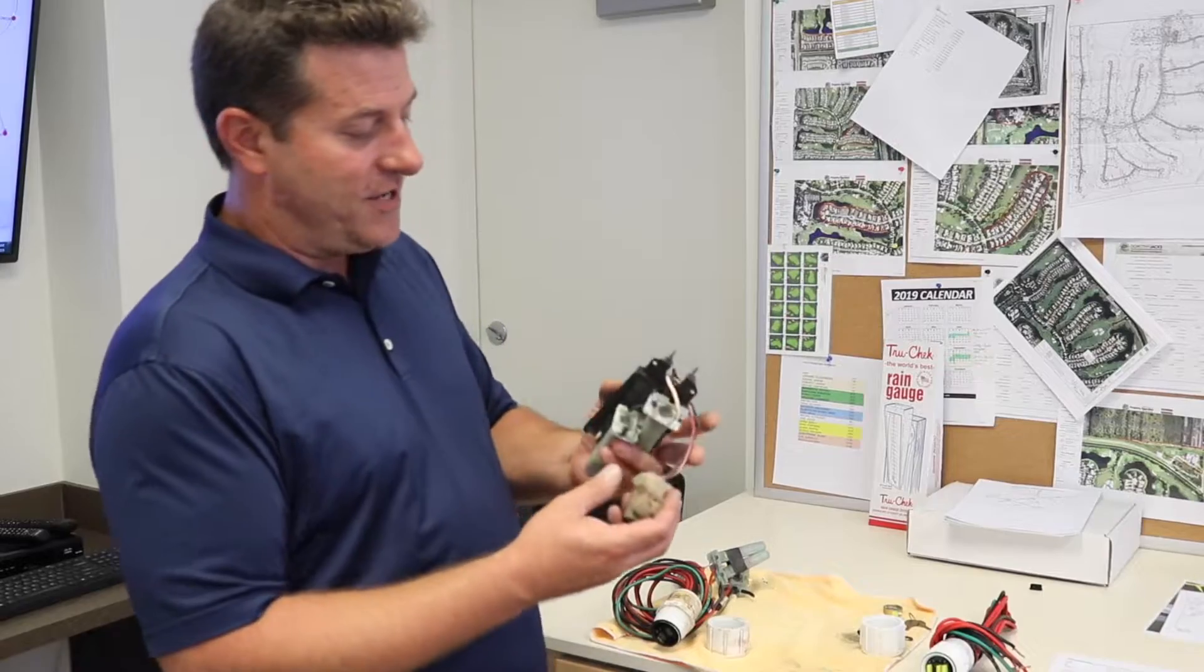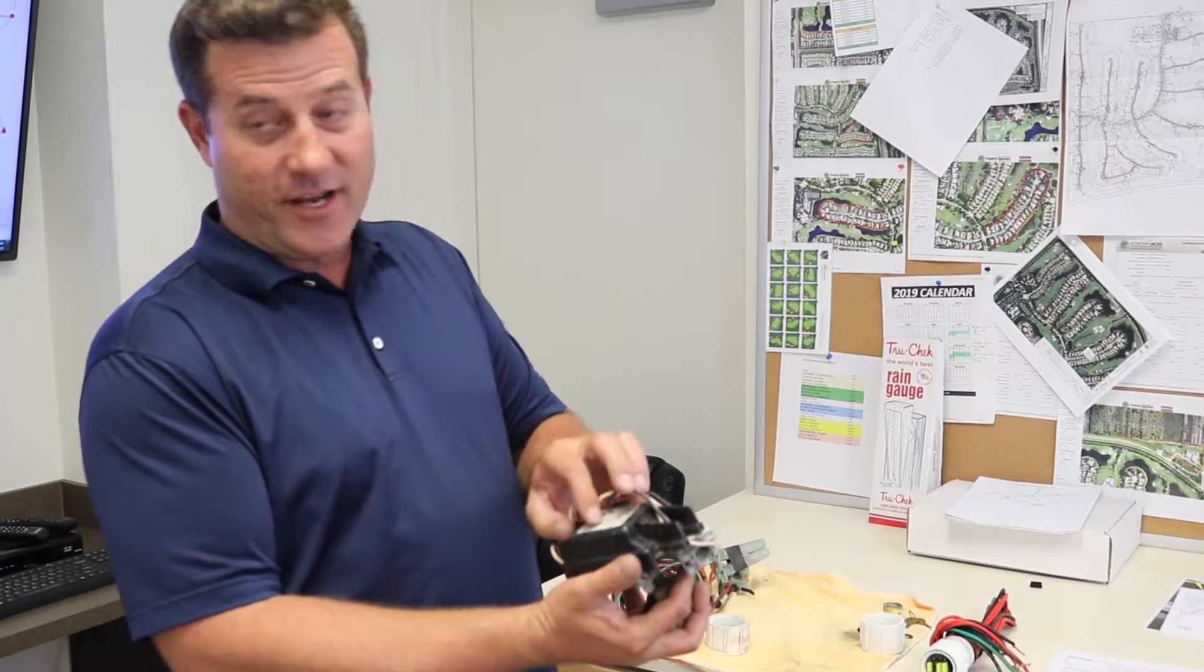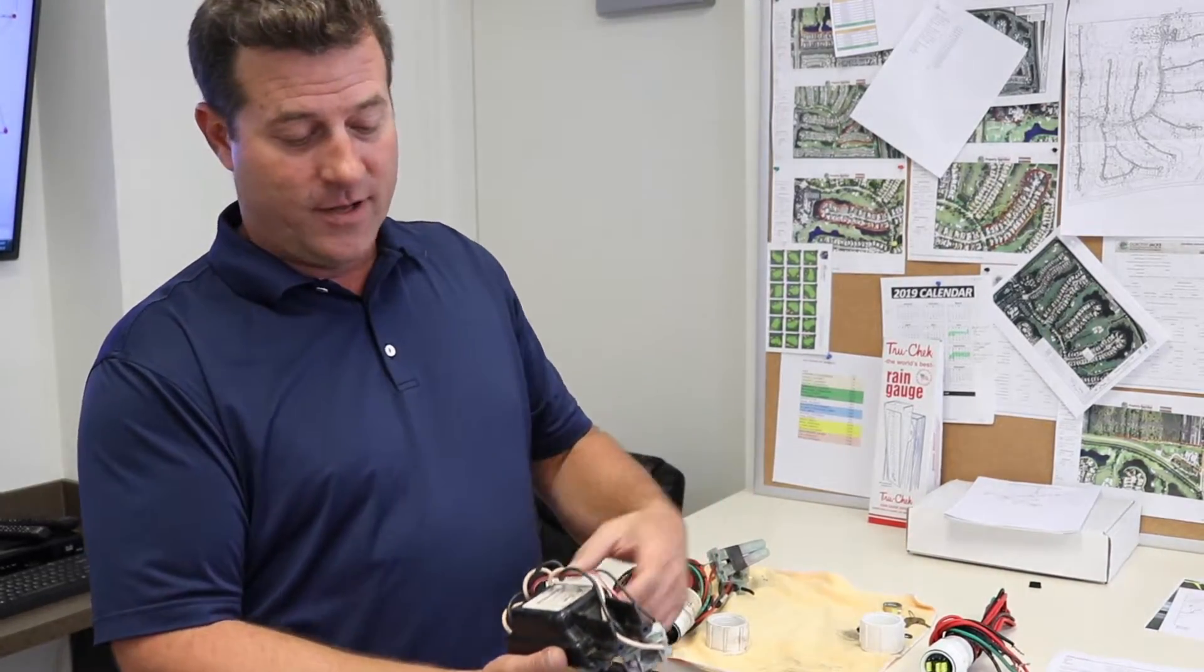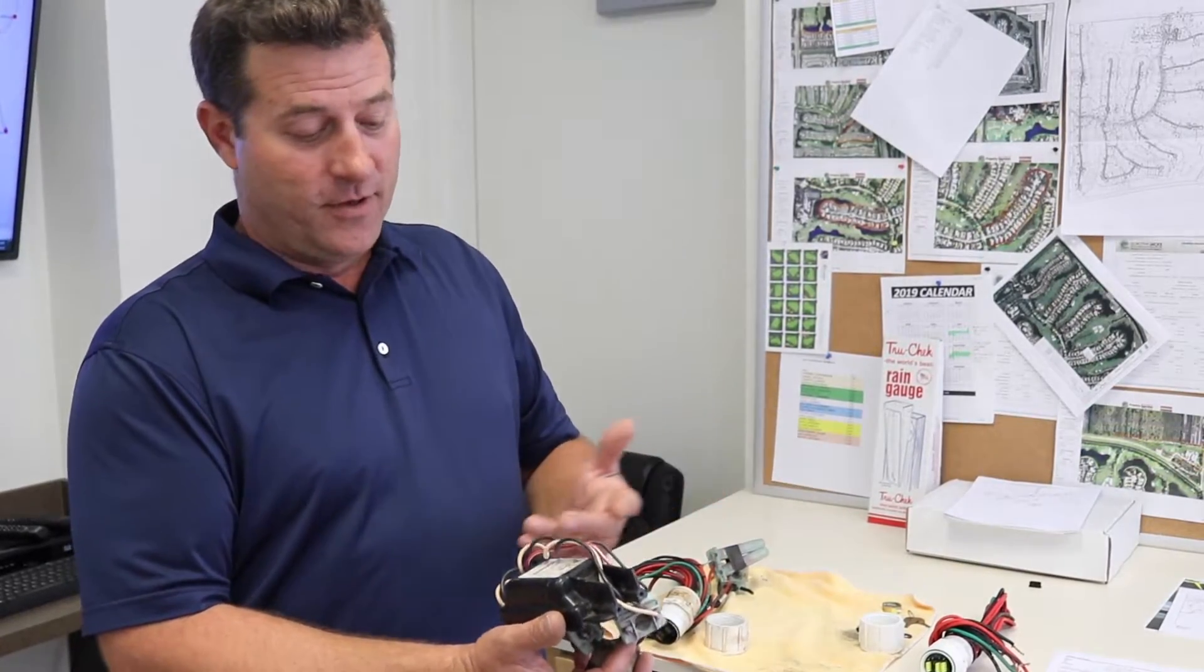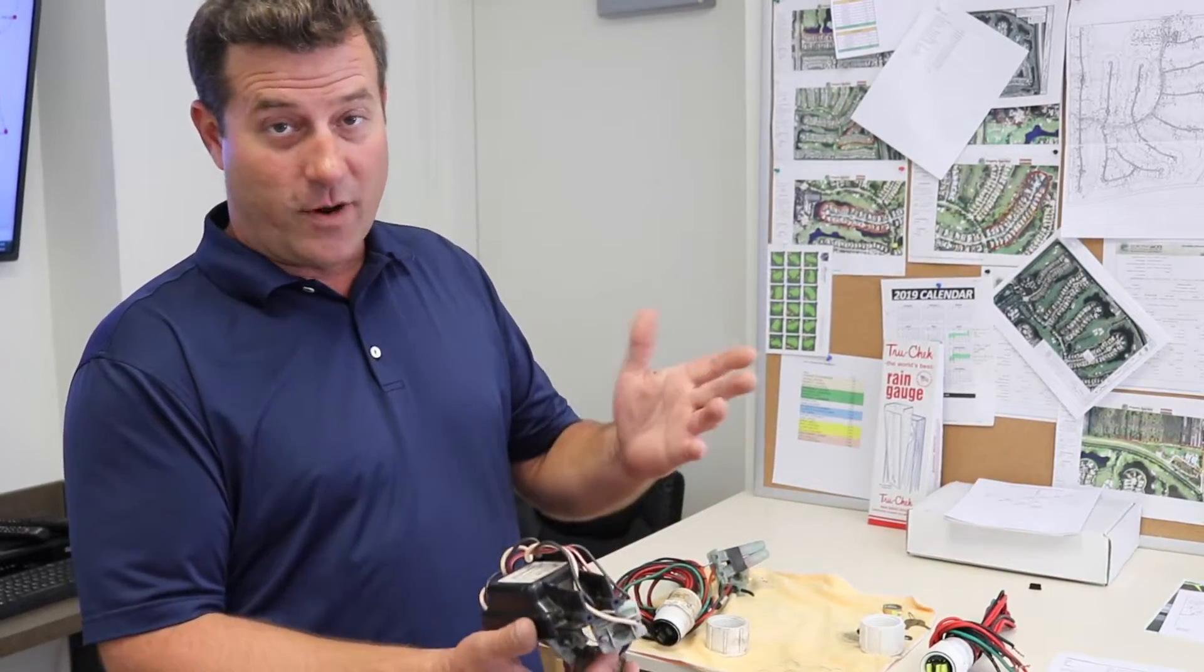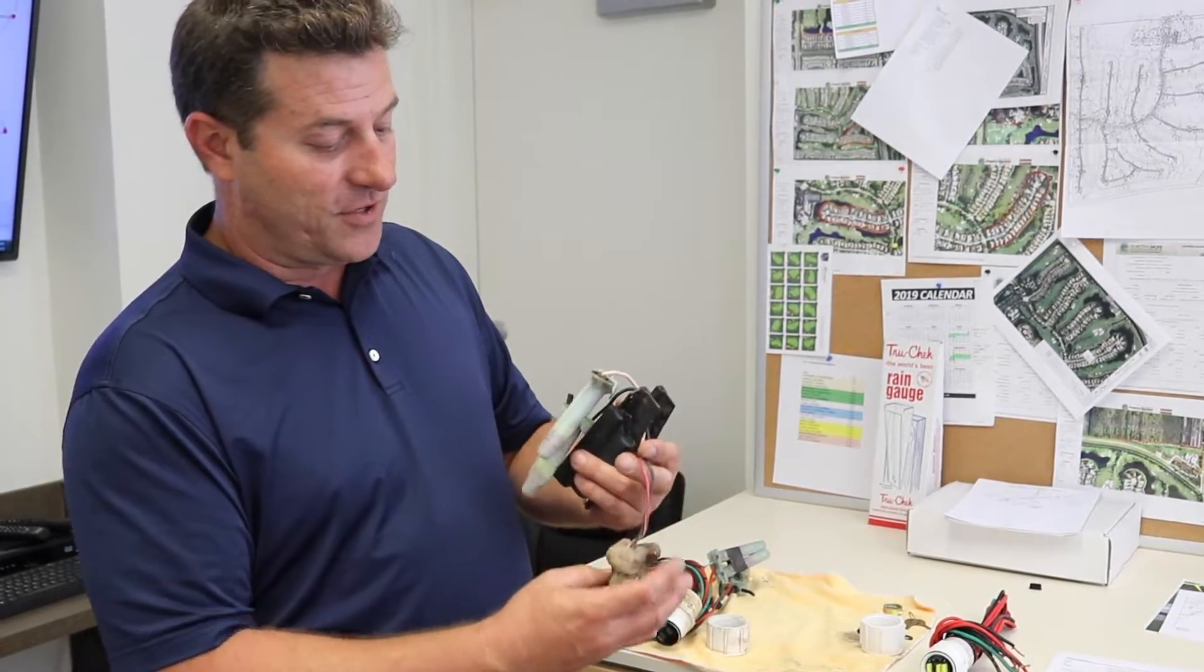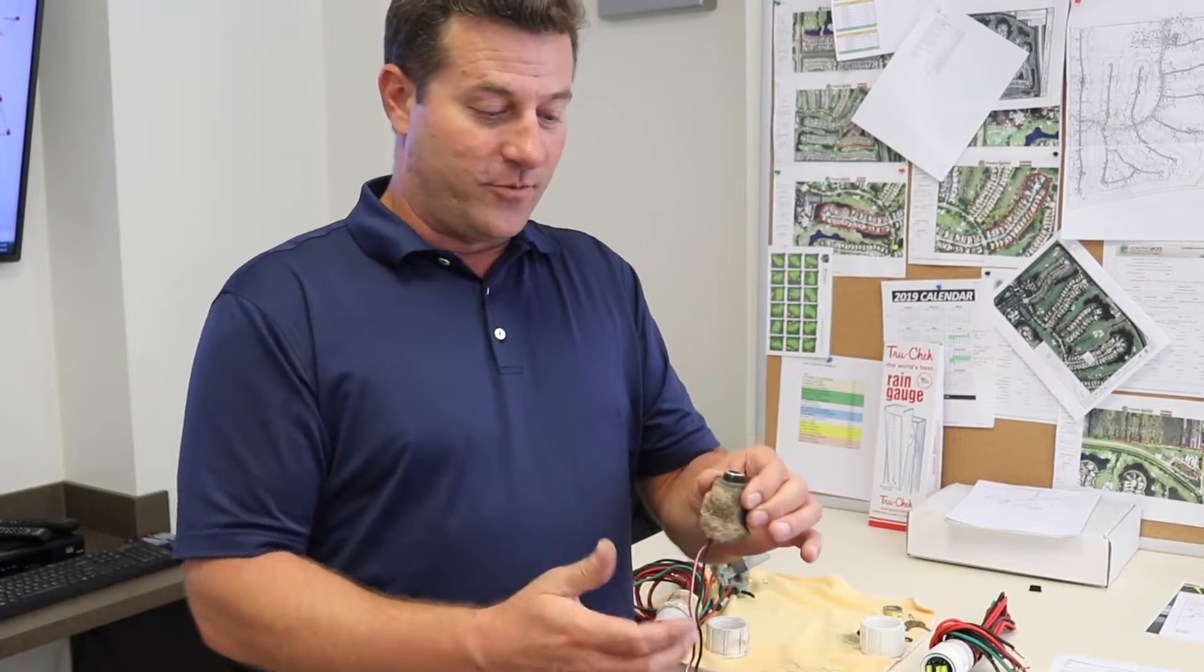Each one of our sprinkler heads has this right here. It's called a decoder. This is what takes the signal from the computer and tells the sprinkler to turn on or turn off. It does know how long we want it to run, whether it's for two minutes, five minutes, or twenty minutes. We can set all those individual times.